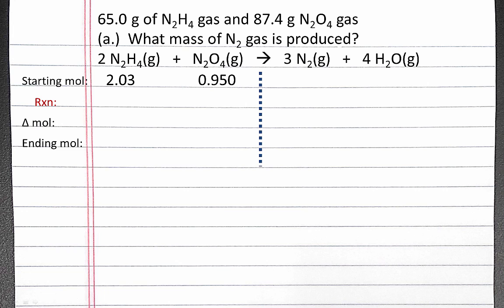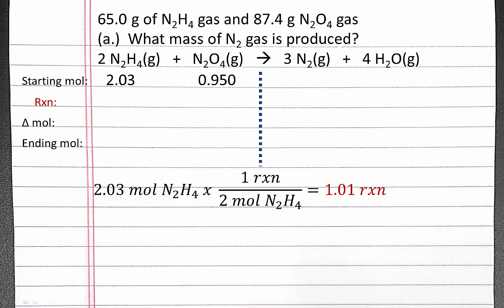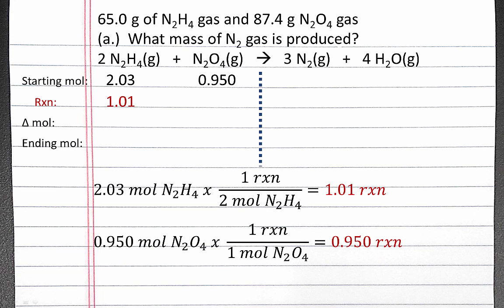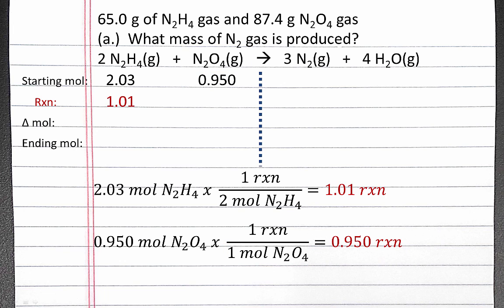Next we want to calculate how many reactions we can perform with each of these moles of reactants. We can also use dimensional analysis for this step. We have 2.03 moles of N2H4, and each reaction requires 2 moles of N2H4, so we can perform 1.01 reactions with N2H4. For N2O4, we do a similar calculation, converting moles of N2O4 into reactions using the coefficient in the balanced chemical equation. For every 1 reaction, we need 1 mole of N2O4, so we can perform 0.950 reactions.